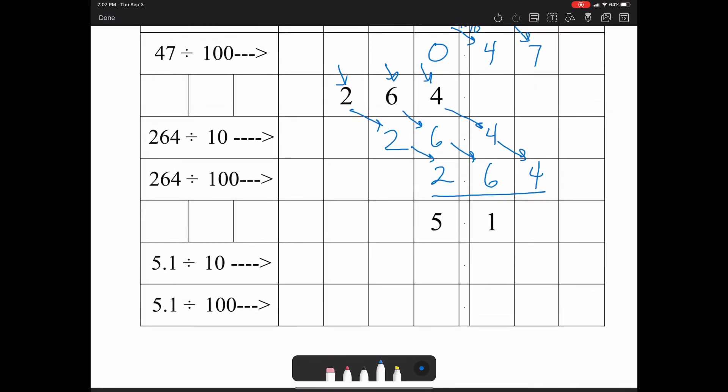For the last problem, 5 and 1 tenth divided by 10, you just keep the same pattern. That becomes 51 hundredths. And 5 and 1 tenth divided by 100...